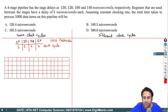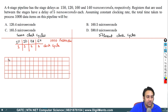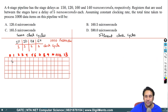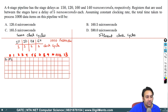We have clock cycles numbered 0 through 13 on one axis, and instructions on the other. Instruction i1 will do instruction fetch, then instruction decode, then calculate the effective address, then execute. Instruction i2 follows: instruction fetch, decode, effective address, execute. Similarly for i3, i4, and i5 — each enters the pipeline one clock cycle after the previous one.